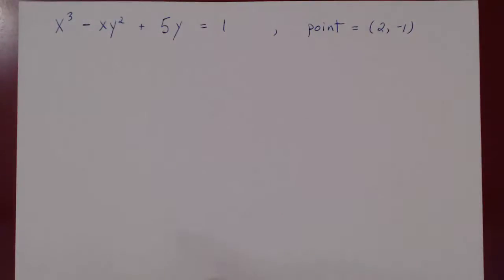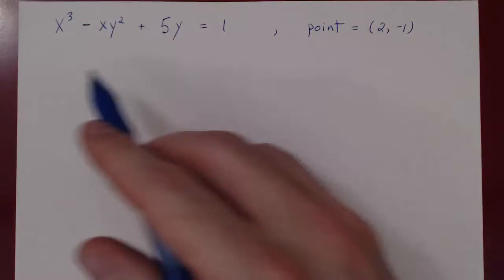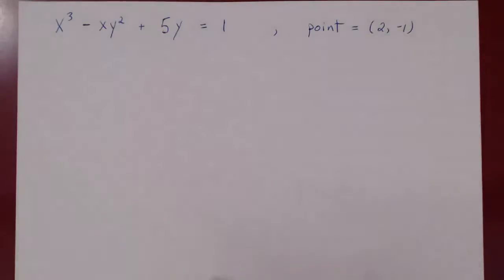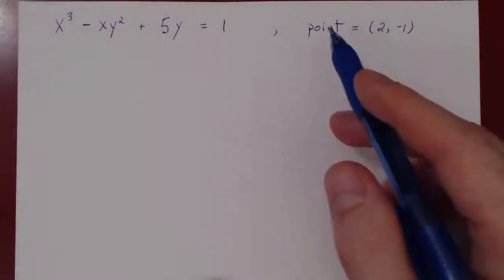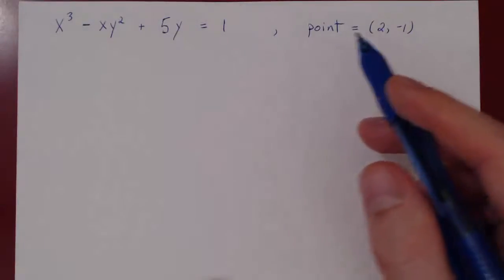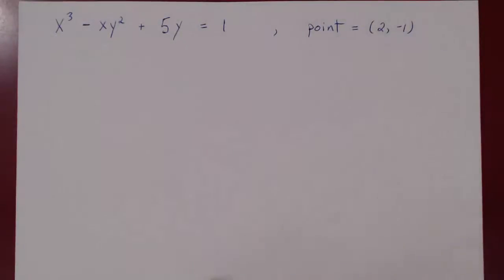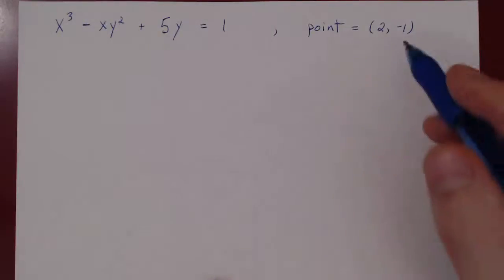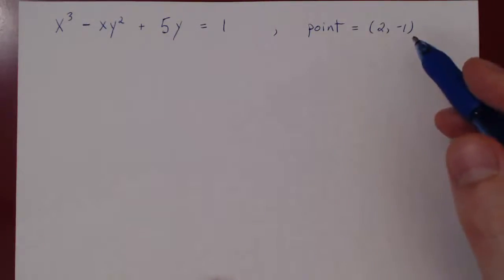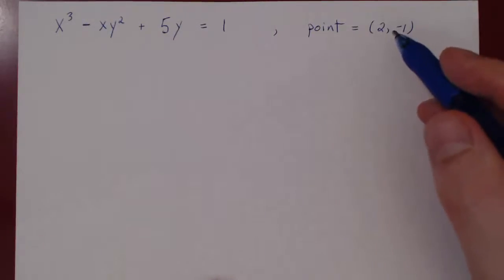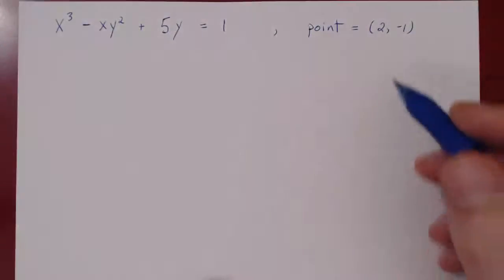For us, we don't need to actually visualize the curve. We want to find the equation of the tangent line at a point, so all we need is the derivative — using implicit differentiation. Let's verify first that this point is indeed a point on our curve.